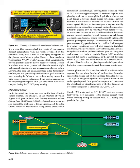This type of navigation system allows you to maintain the cruise speed up until the top-of-descent point and calculates the deceleration simultaneously with the descent. Simple FMS units such as GPS RNAV receivers assume that you will slow the aircraft to the planned descent speed before reaching the top-of-descent point. ATC timing may preclude this plan.